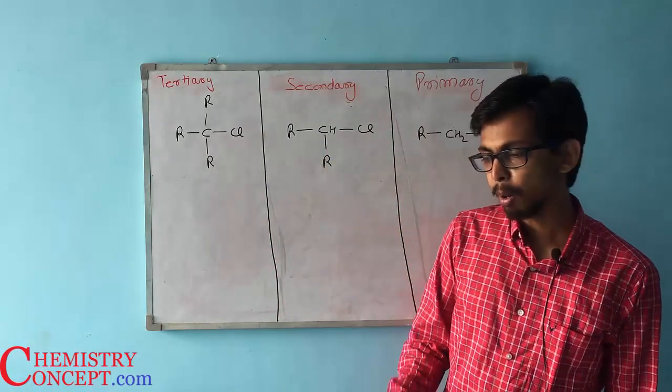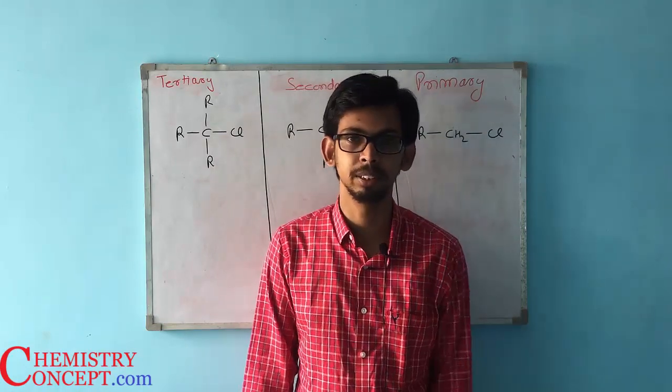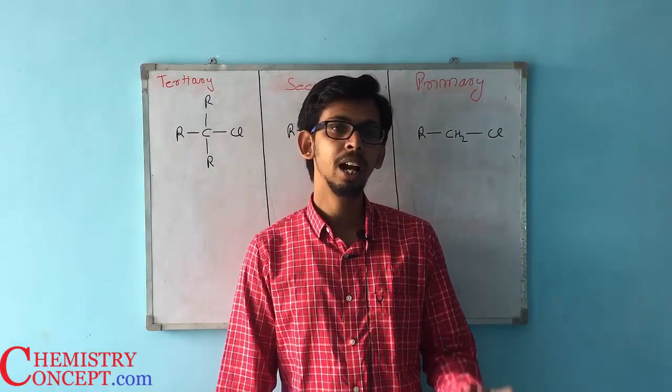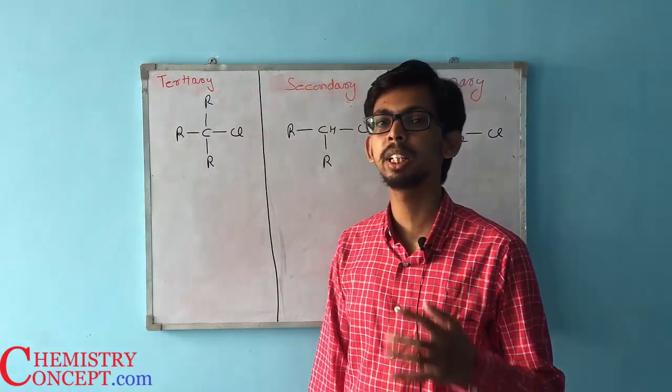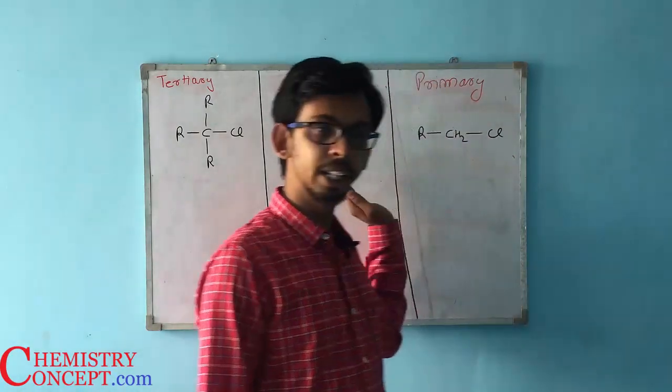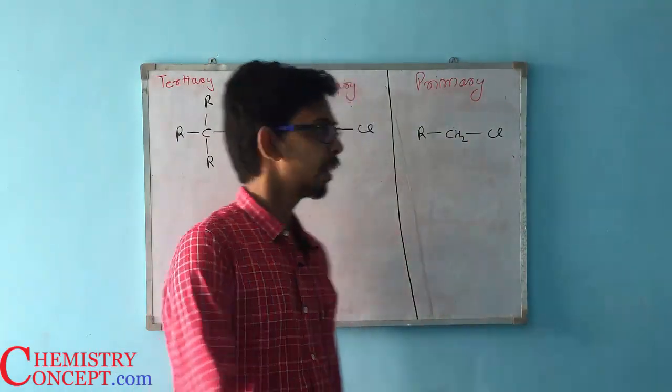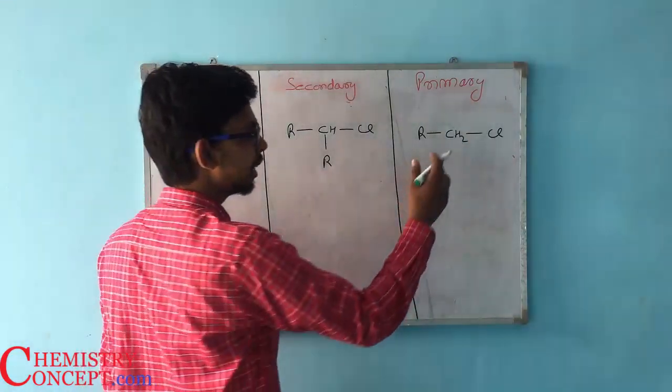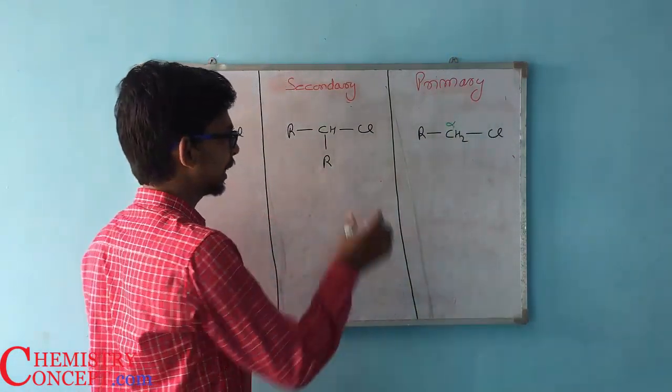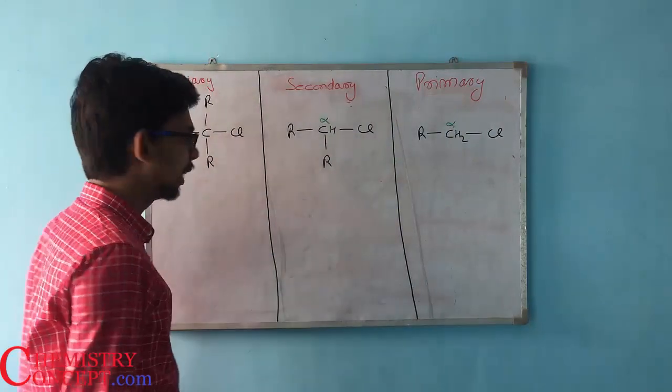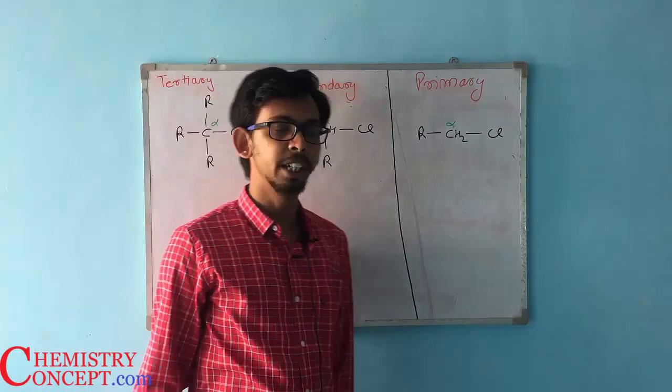If a compound is primary, secondary, or tertiary is decided on the basis of alpha carbon. What is the alpha carbon? As per the definition, alpha carbon of a compound is that carbon to which the functional group is directly attached. Here I have written certain examples of alkyl halides, so chlorine is the functional group. If you see, on this one the alpha carbon is CH2 to which the functional group is attached. Here the alpha carbon is CH, and in this one the alpha carbon is C.